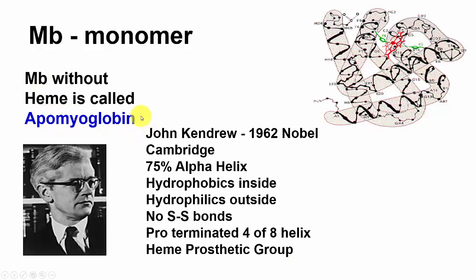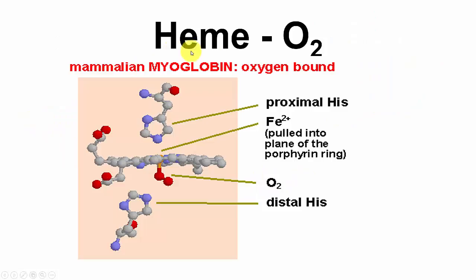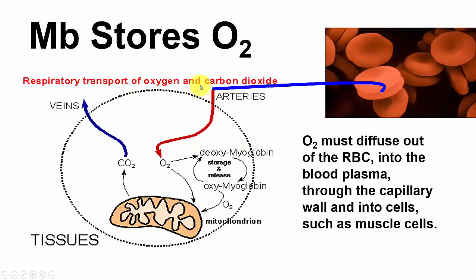Myoglobin without heme is called apomyoglobin; hemoglobin without heme is apohemoglobin. In heme-O2 binding, there are two histidines: the proximal histidine, whose nitrogen coordinates with the iron in the heme, and the distal histidine on the other side where oxygen binds. When oxygen binds, the heme becomes very planar and tugs on the proximal histidine. Myoglobin stores oxygen — as red blood cells move to the periphery, they release O2, which binds to deoxymyoglobin to form oxymyoglobin, which is then used by mitochondria to produce energy.